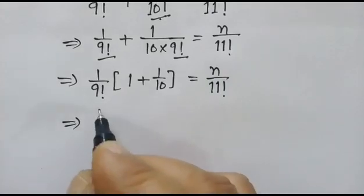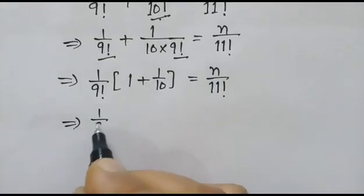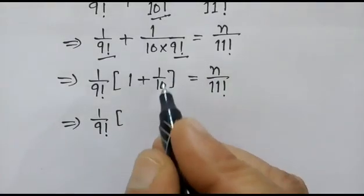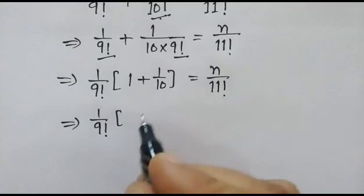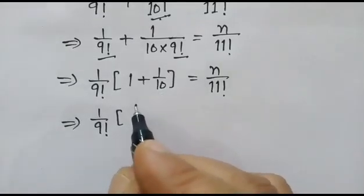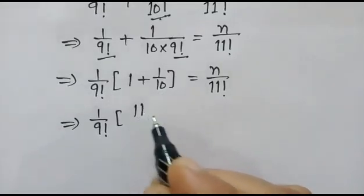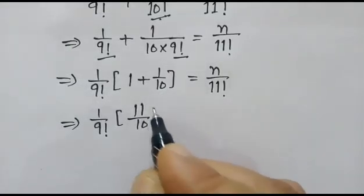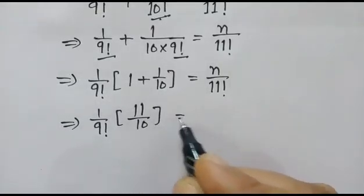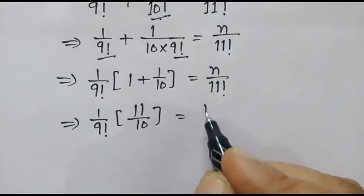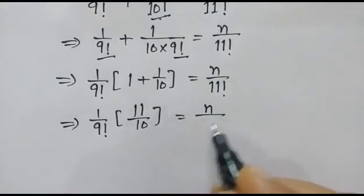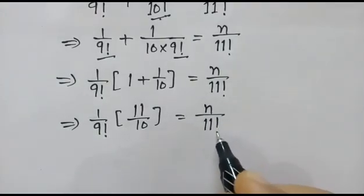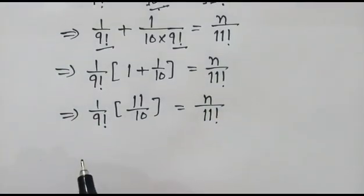Now 1 over factorial 9, and 1 plus 1 upon 10 simplifies to 11 over 10, which equals n over factorial 11.